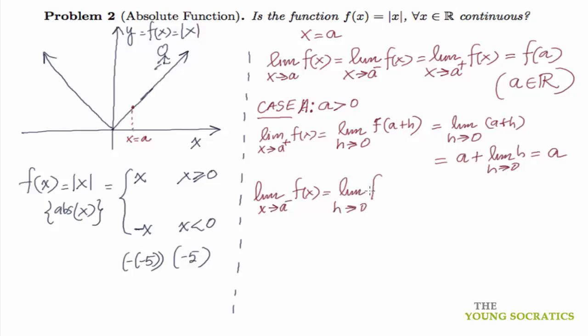Also, limit of x→a⁻ of f(x), this is the left-hand side limit. h is small enough, so a-h will still be greater than 0. Hence this is equal to limit of h going to 0 of (a-h), which is still a.